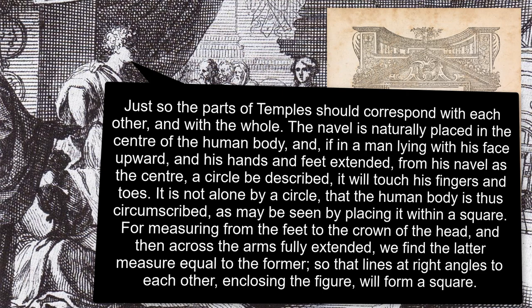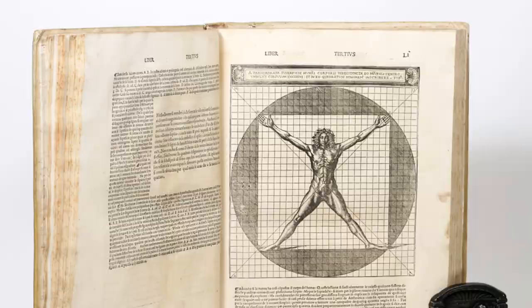The navel is naturally placed in the center of the human body, and if a man lying with his face upward and his hands and feet extended — from his navel as the center a circle be described — it will touch his fingers and toes. It is not alone by a circle that the human body is thus circumscribed, as may be seen by placing it within a square. Measuring from the feet to the crown of the head and then across the arms fully extended, we find the latter measure equal to the former.